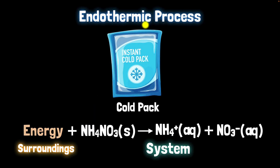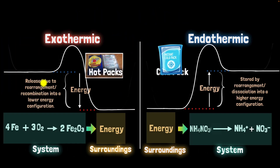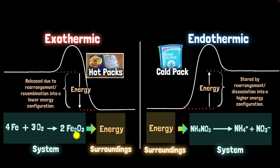Notice that it's an endothermic process because energy is going from the surrounding to the system. So putting it all together, an exothermic reaction is where energy is released from the system to the surrounding. Where did this energy come from? The energy is released when the high energy reactant molecules are rearranged to form low energy product molecules.